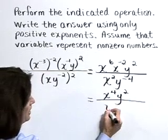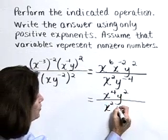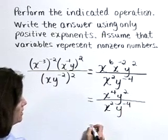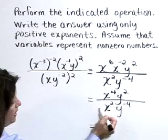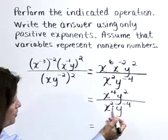In the denominator, let's just leave that as x squared times y to the negative 4. Now I'd like to use the quotient rule. As we divide these like bases, we'll subtract the exponents.